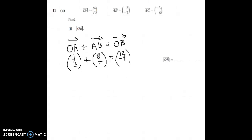Okay, so we added the two vector columns. Magnitude of OB is equal to is going to be equal to 12.64 or something like that.